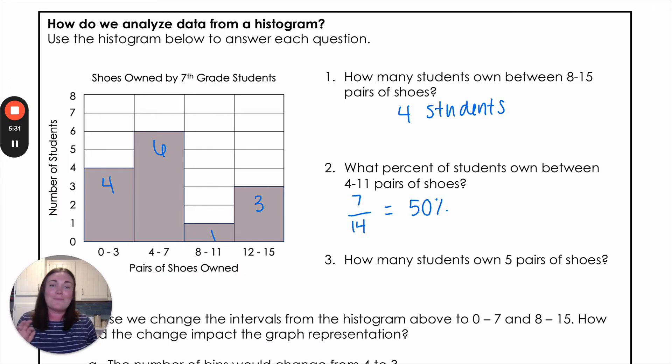All right, number three, how many students own five pairs of shoes? Well, I know that five pairs of shoes is going to be in this four to seven category. So I know if there are six students that could own five pairs of shoes, but we don't know how many pairs of shoes they actually own. They could all own four. They could all own seven. They could be a whole mixture in between. So this is not a question that we can answer from a histogram. I know that feels kind of wrong to put that on a test, where you can say we don't know, but that's an actual question that they might ask and an actual answer you might give is that we just don't have the right information to answer that question.